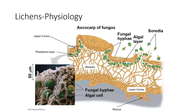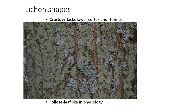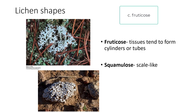Foliose lichens look like leaves and can be found all over campus. If you do a cross-section of a foliose lichen and compare it to a cross-section of a leaf, you will see very similar physiology between the two. Fruticose lichens form tubes and cylinders containing algae, with really cool branched structures visible on many trees around campus.